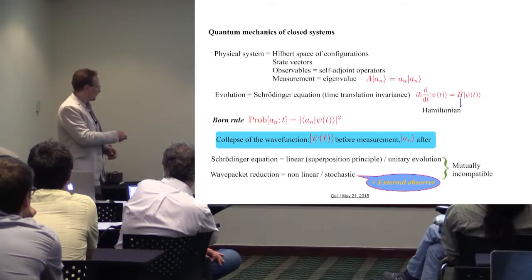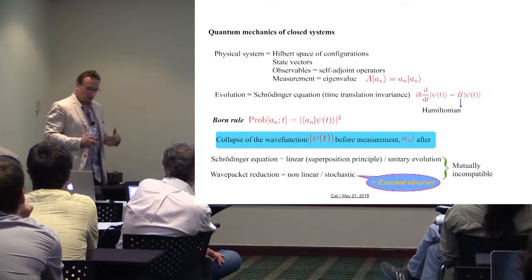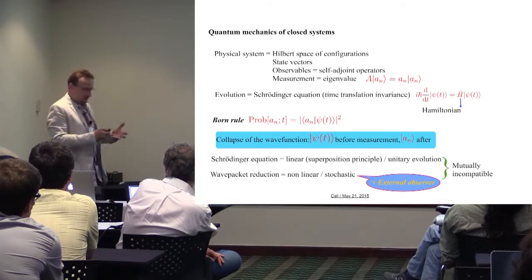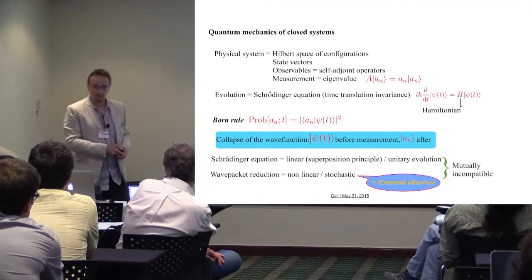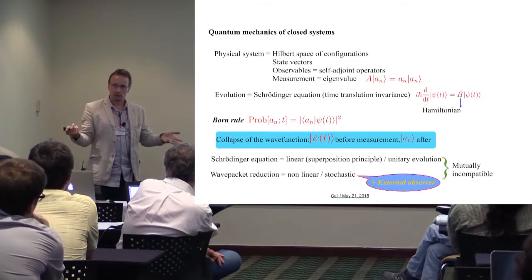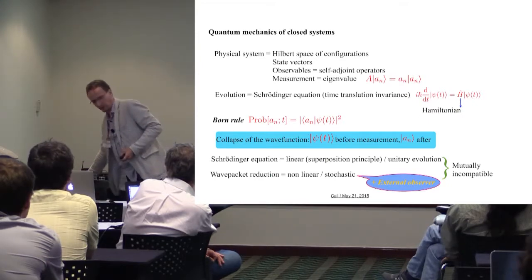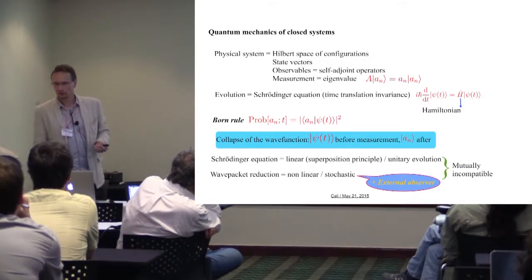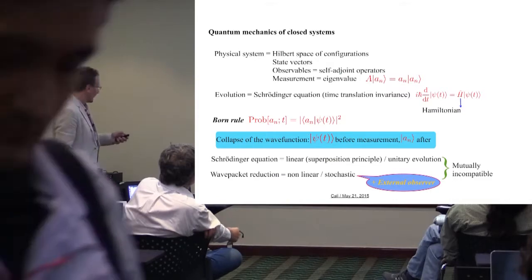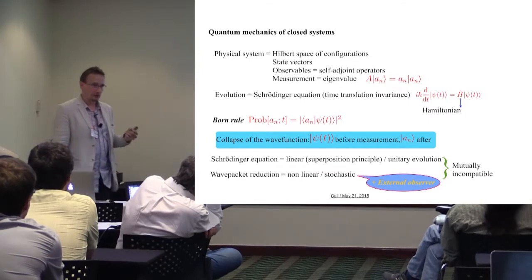Then you collapse the wave function: you have Psi of t before the measurement, and you have this special eigenvector right after the measurement, and from that point on you continue the evolution. Quantum mechanics is described by a Schrödinger equation — a linear equation satisfying the superposition principle, essentially a unitary evolution — and then you have this wave packet reduction given by the Born rule, which is nonlinear and stochastic. And crucially in cosmology, you need an external observer, which is obviously going to be a problem, since there is no such thing as an external observer in the universe. These two different evolutions are mutually incompatible, and this is for me the starting point of the problem.